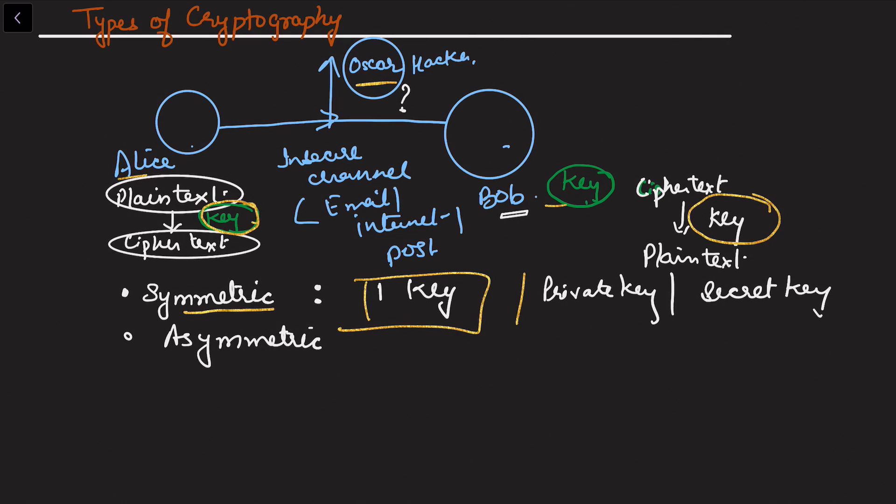We can say that whenever we use one key, it is used for the encryption process. Encryption process means when we have converted plaintext into ciphertext - we have encrypted the data or the message. When ciphertext is back converted into plaintext, this process we call decryption. These basic definitions I have used in my last video.